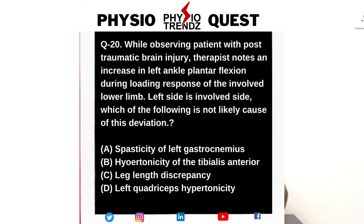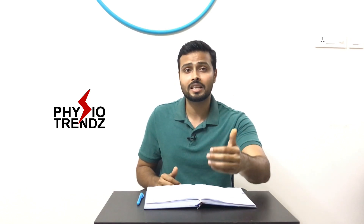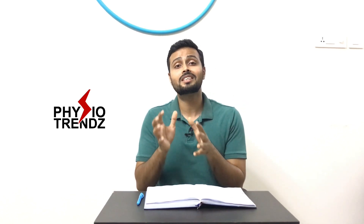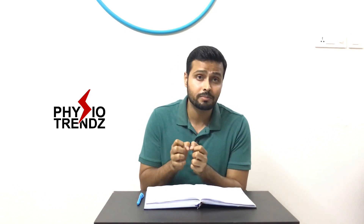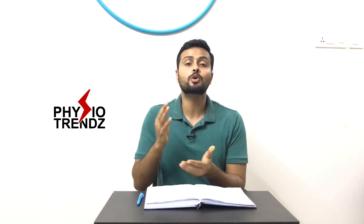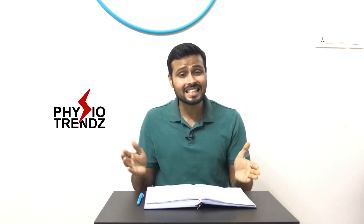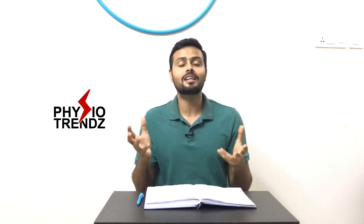Option D is left quadriceps hypertonicity. The correct answers are B and D. Let me explain. Option A is eliminated because spasticity of the gastrocnemius will obviously cause plantar flexion. Option C, leg length discrepancy — when taking the assessment, we can eliminate leg length discrepancy in the initial stage itself.